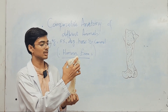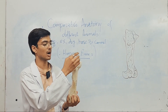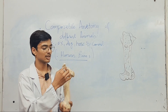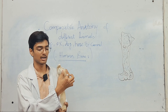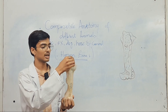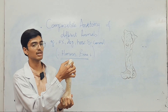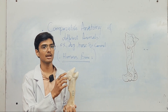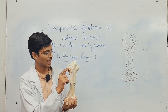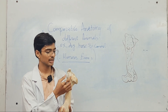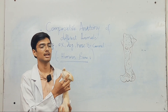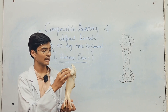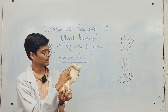The greater tubercle is subdivided into two parts: cranial and caudal. Likewise, the lesser tubercle also has cranial and caudal parts. As you can see, the greater tubercle gives insertion for the infraspinatus and supraspinatus muscles, and the lesser tubercle gives insertion for the teres minor muscles. This is the humeral head and this is the humeral neck.